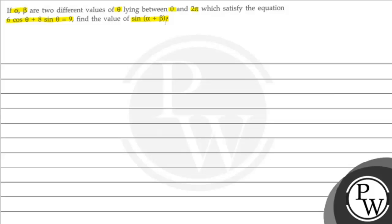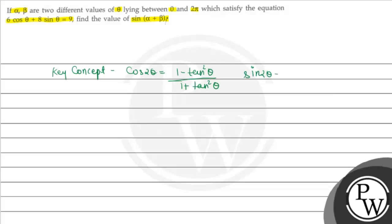The key concept for this question is: cos2θ = (1 - tan²θ) / (1 + tan²θ), and similarly sin2θ = 2tanθ / (1 + tan²θ).